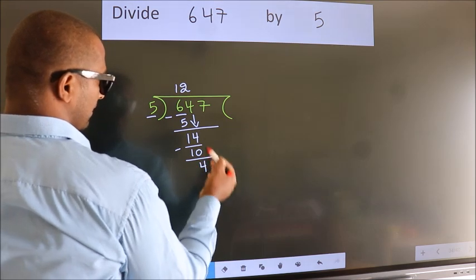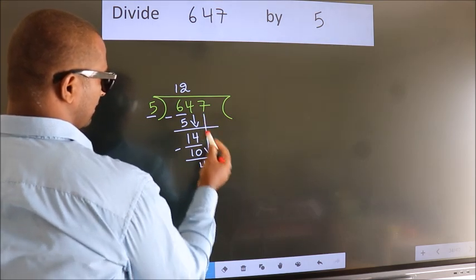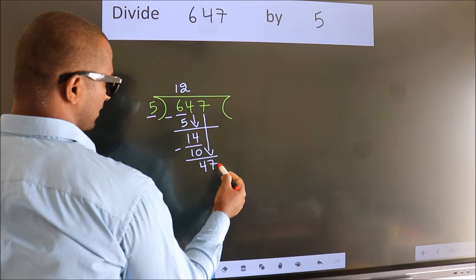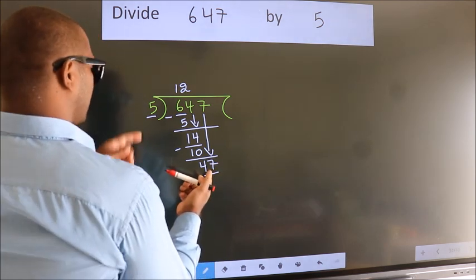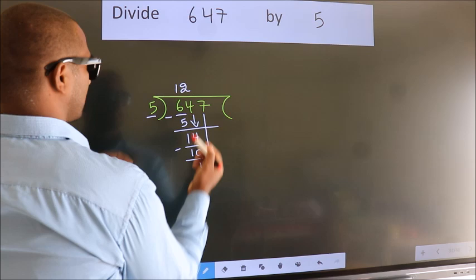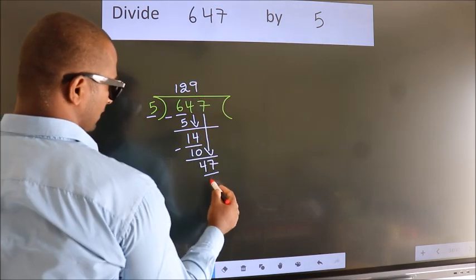After this, bring down the beside number, so 7 comes down. So 47. A number close to 47 in the 5 table is 5 times 9, which is 45.